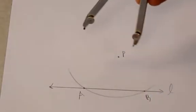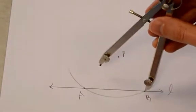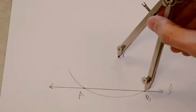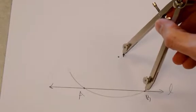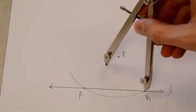Okay, now our next step, since P is on the perpendicular bisector, is we're just going to put the point on B and then draw an arc.